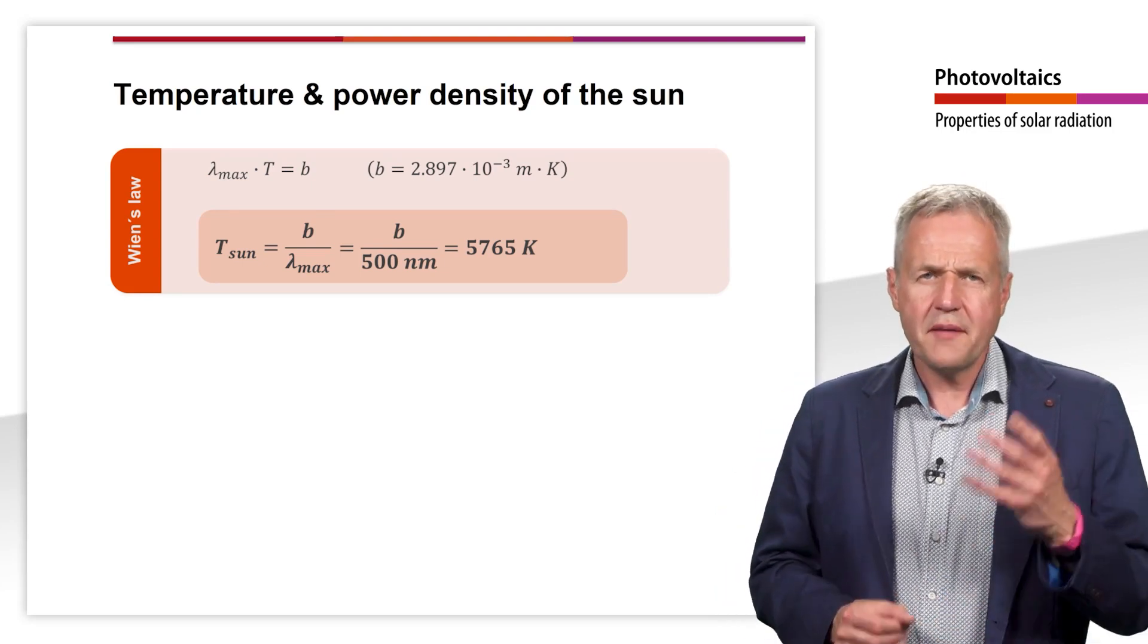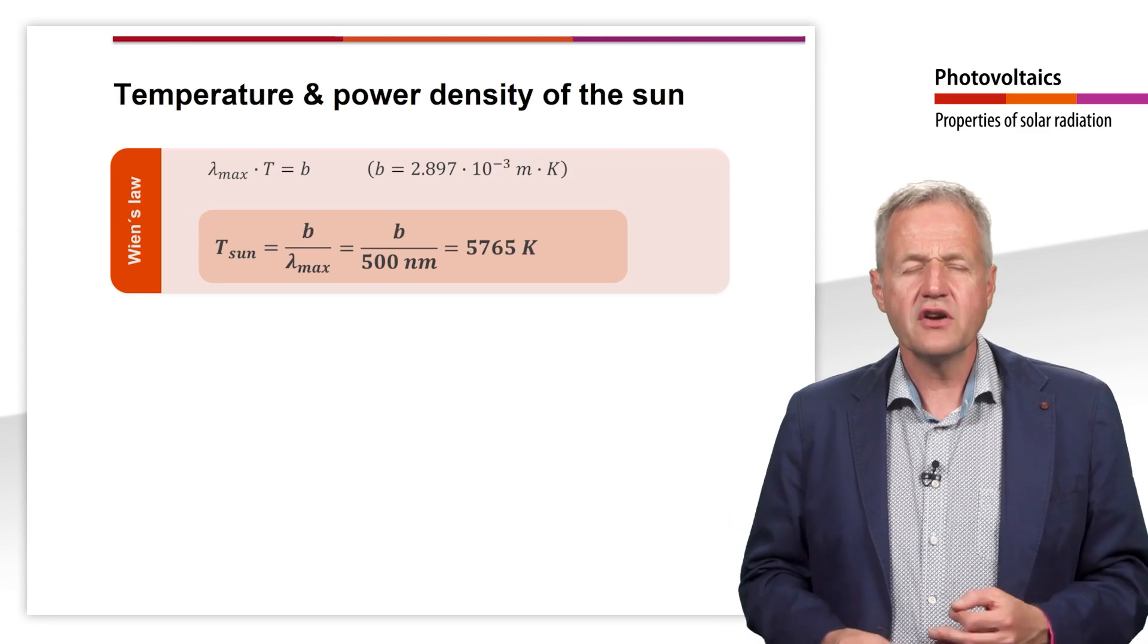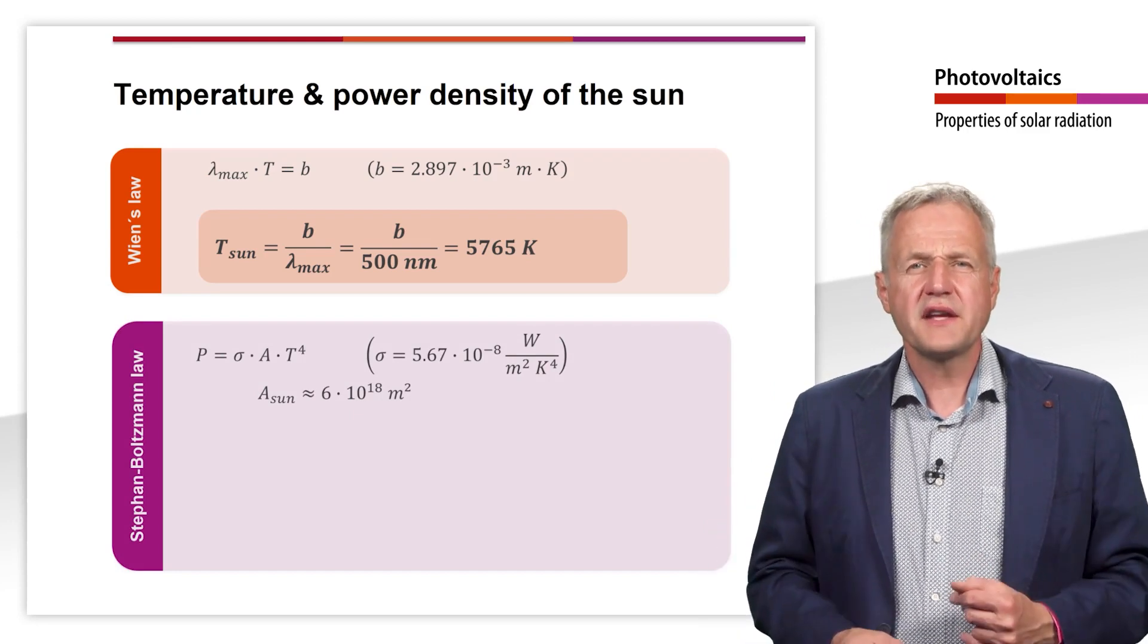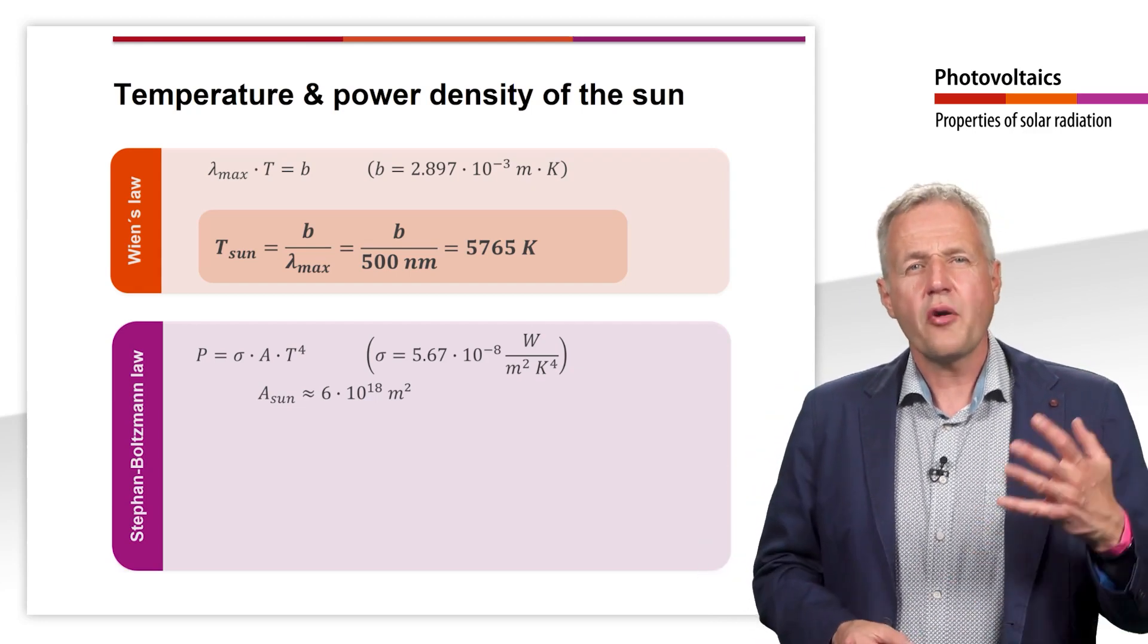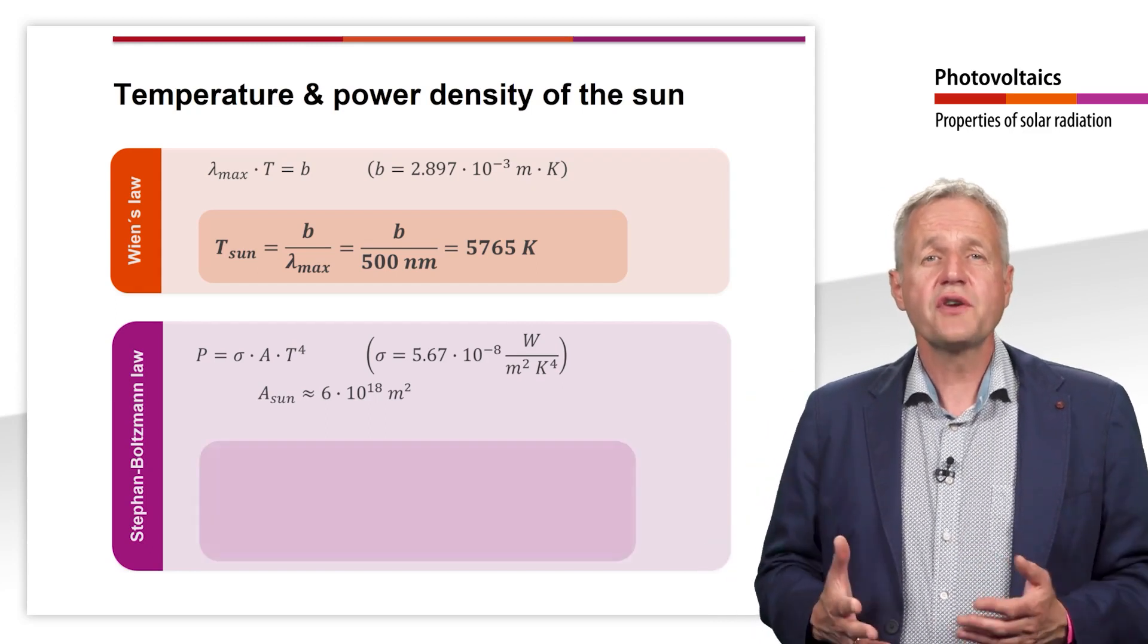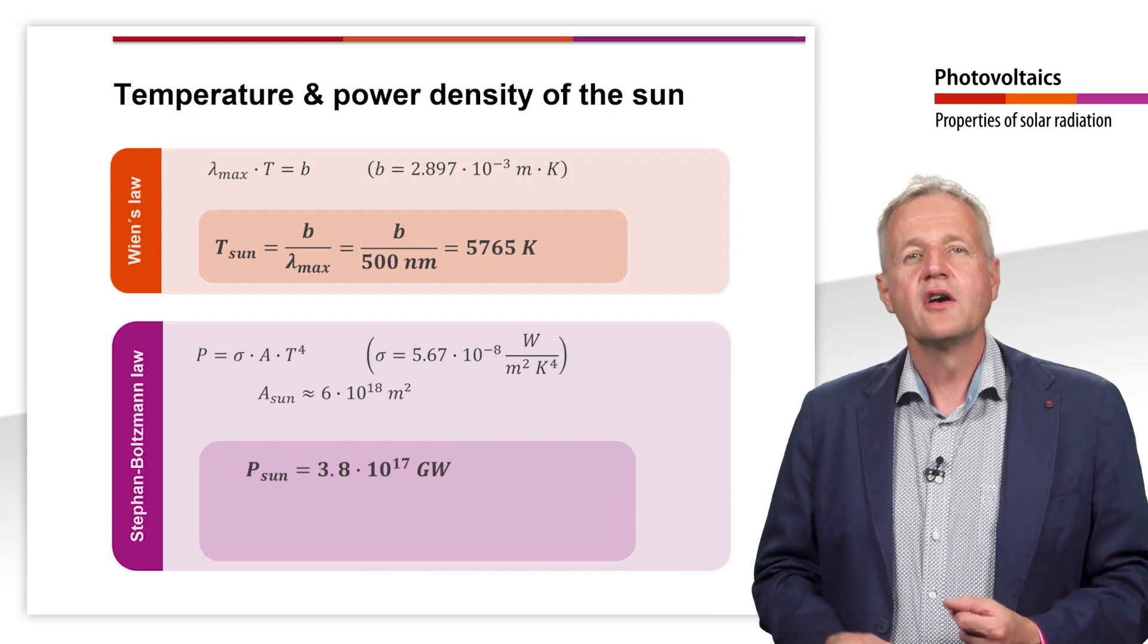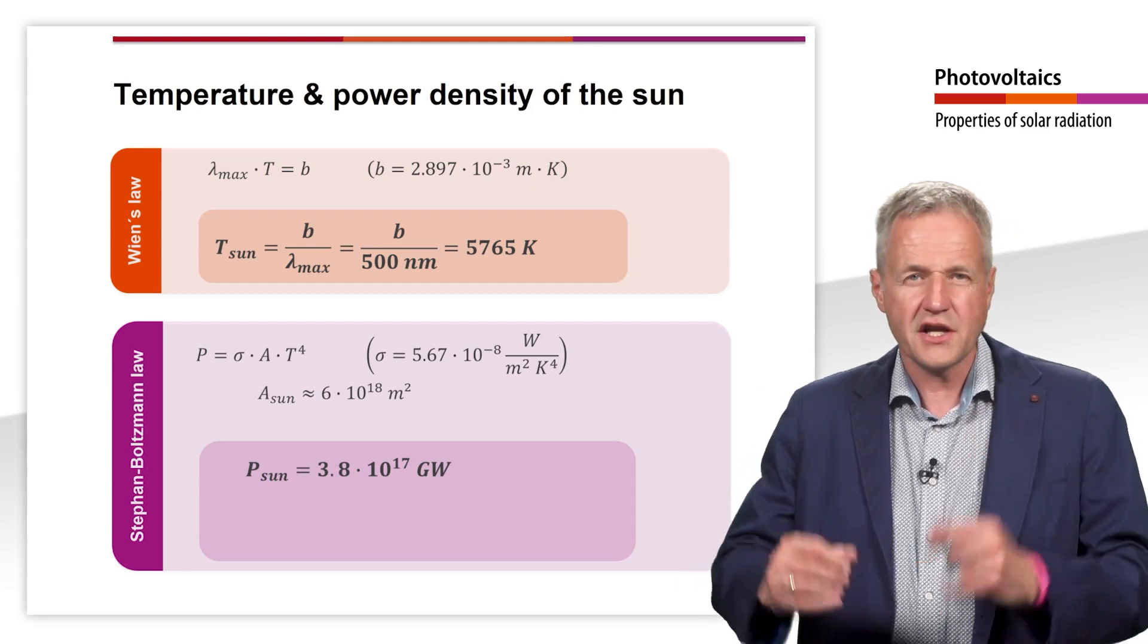More important than the temperature is the power of solar radiation. This can be calculated from the temperature with the help of the Stefan-Boltzmann law. According to this, the radiant power of a blackbody radiator is proportional to the temperature to the power of 4. With the proportionality constant sigma and the surface of the sun, the equation shown here results in a radiation power of 3.8 times 10 to the power of 17 gigawatts. For comparison, a medium-sized nuclear power plant delivers a power of slightly more than 1 gigawatt.